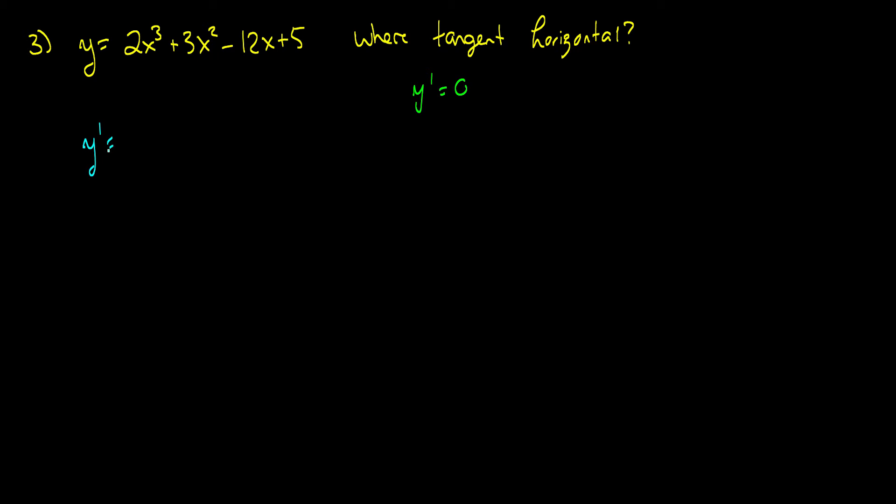y prime is equal to, oh look, this is a very easy derivative. 2x cubed becomes 6x squared plus 6x minus 12. Let's do some factoring here. We get 6 times x squared plus 6 minus 12. And we can factor even further. So this becomes, let's see what do we have here.